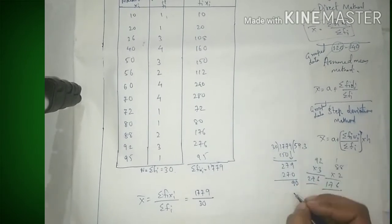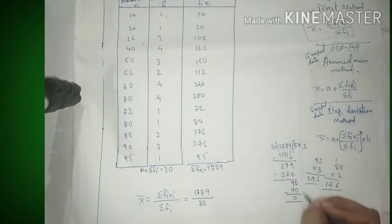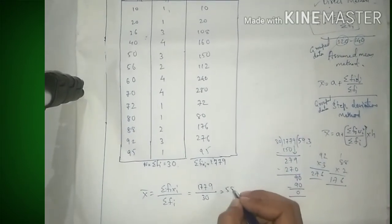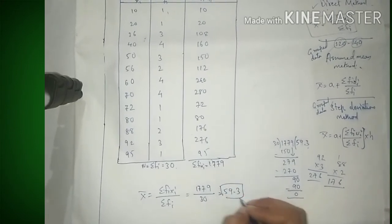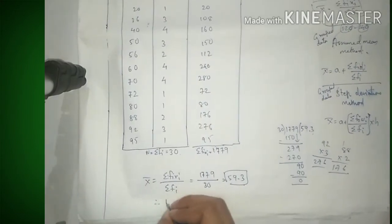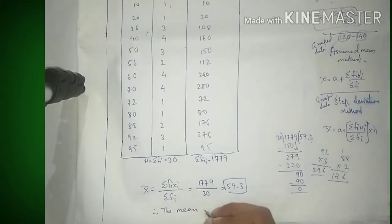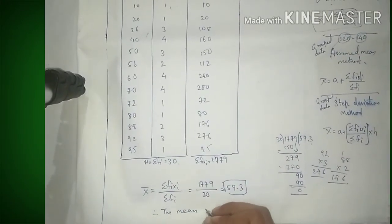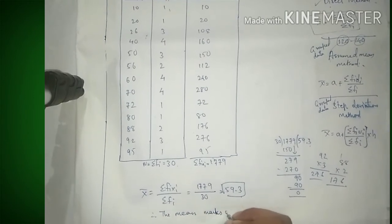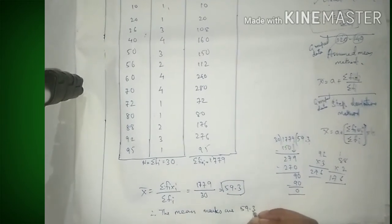1779 ÷ 30 = 59.3। Therefore, the mean of marks = 59.3। यह हमारा final answer है।